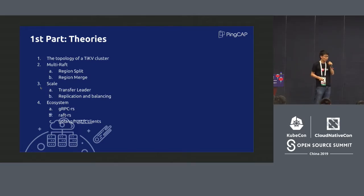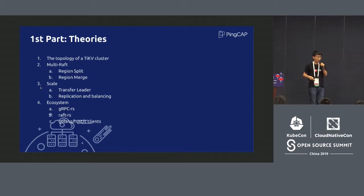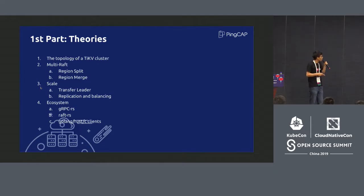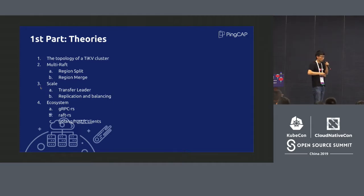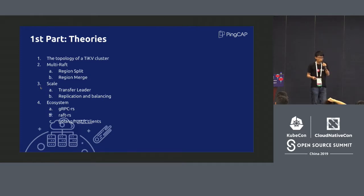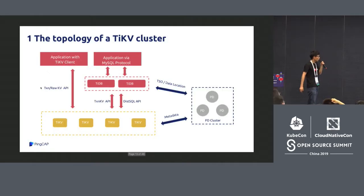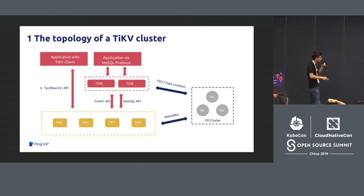For the first part, when exploring the TiKV cluster topology, the core concept is multi-raft. Since TiKV is a distributed key-value project, we use multi-raft to ensure data consistency. In a distributed system, data migration must be completed automatically — manual migration is not acceptable. The third aspect covers the scalability of our system, and the fourth covers the ecosystem.